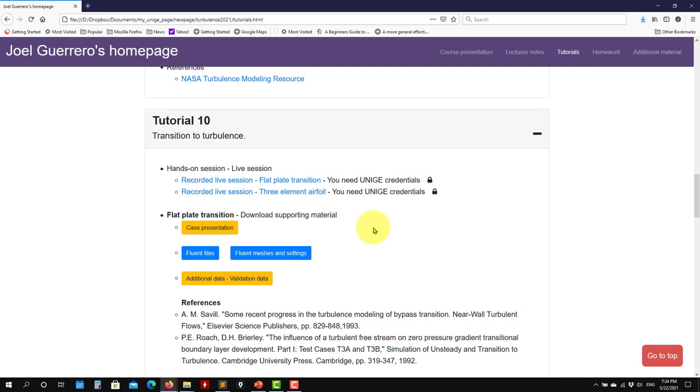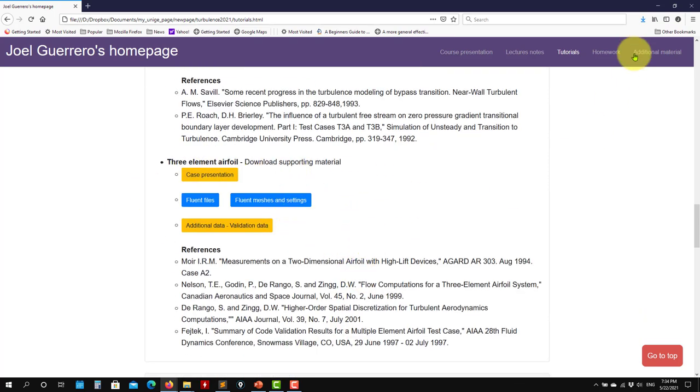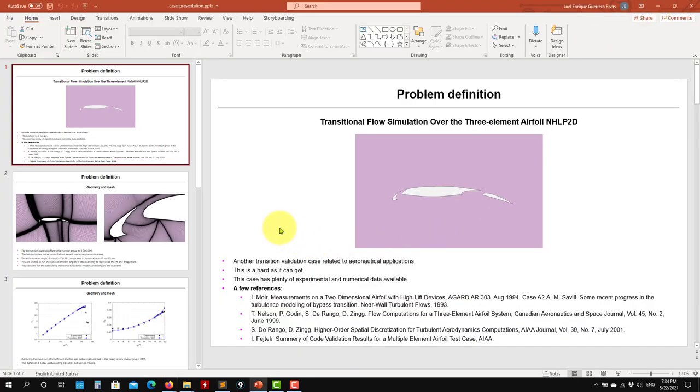Hello, welcome back to the second tutorial of Transition to Turbulence. In this case, we are going to work on the three element airfoil. You have here all the files and some references, so let's see what we're going to do.